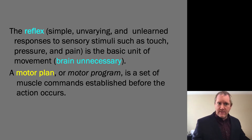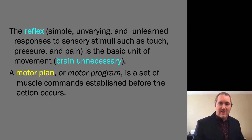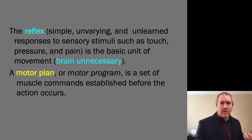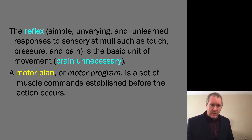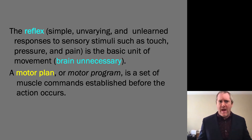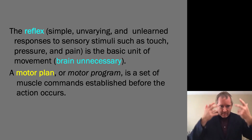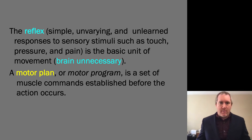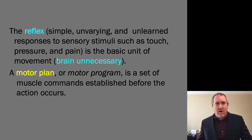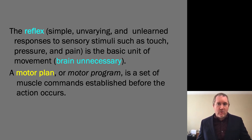The reflex, which we've already studied a little bit, is a simple, unvarying, and unlearned response to sensory stimuli, such as touch, pressure, and pain. Later on, we're going to learn different ways through which the body processes information about pressure versus touch and pain. But today, we're talking about the top-down pathway. Our iron example showed that the brain is unnecessary for these simple spinal reflexes, which are the basic unit of movement.